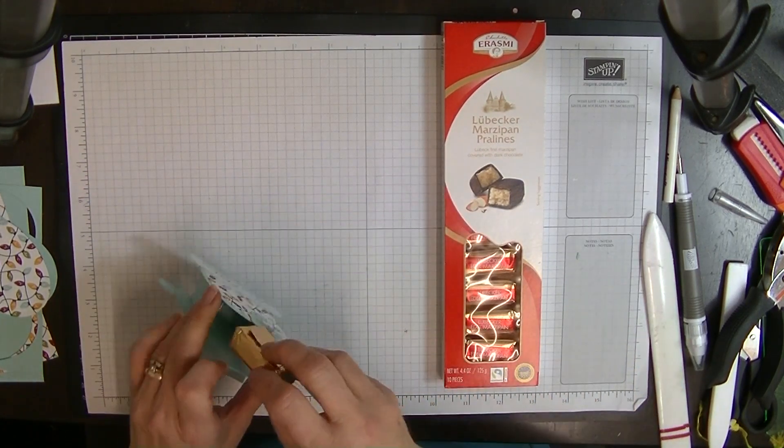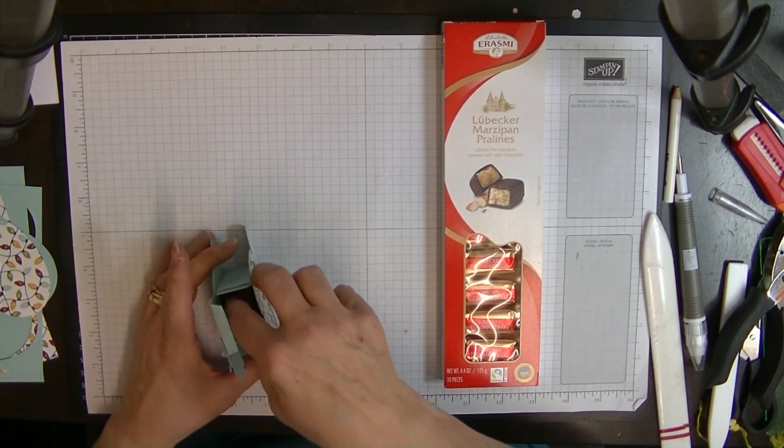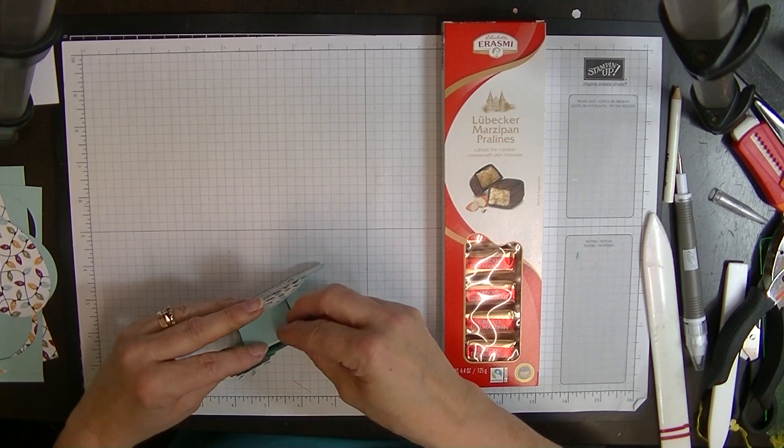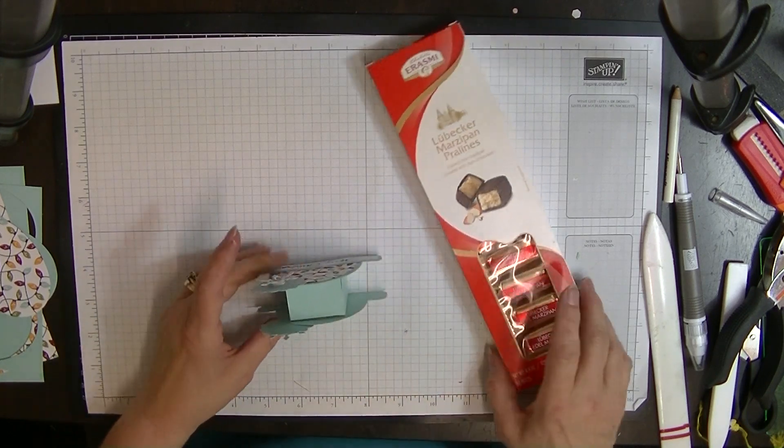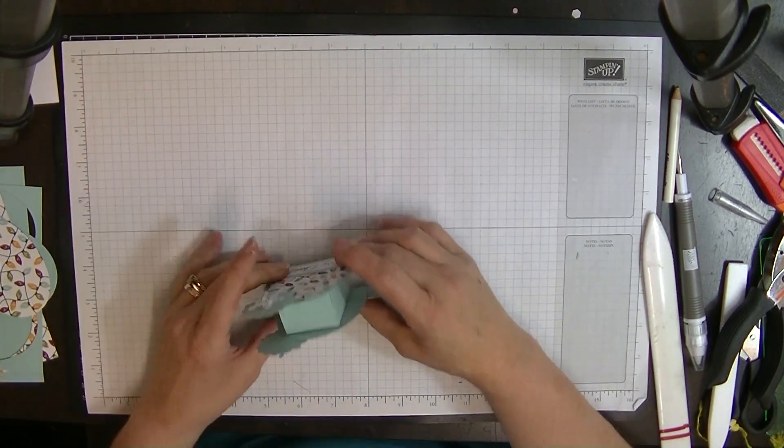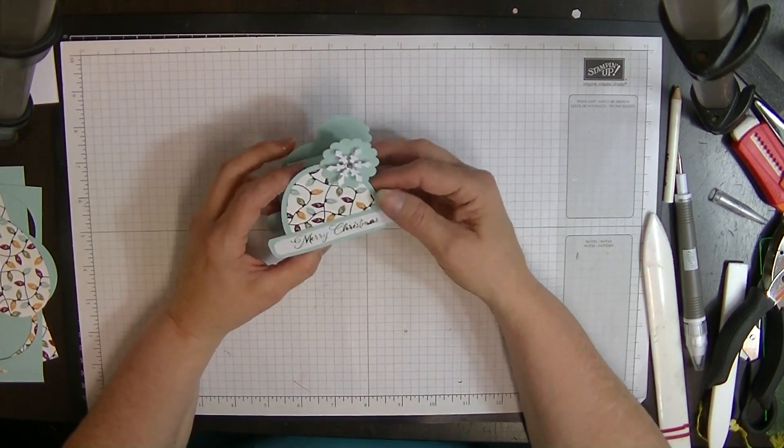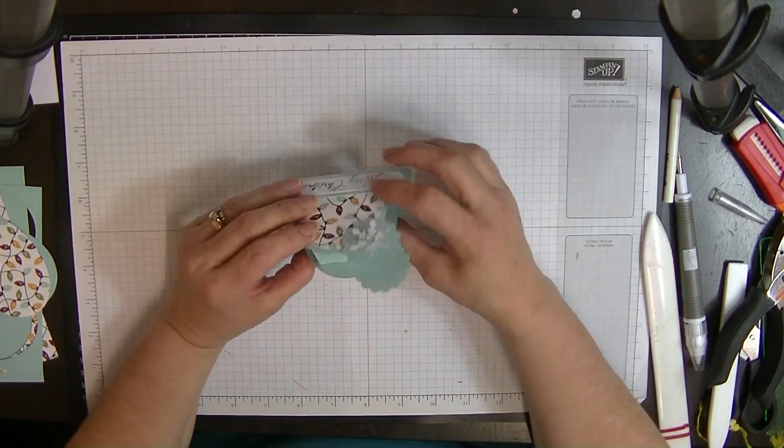And it will hold two of those. So you can pop two of those into a nice little box there and put this on the table as a nice little party favor. It looks like a little beanie and it's just so cute. I love it. I absolutely love it. So we're going to make this one.